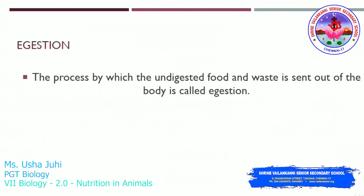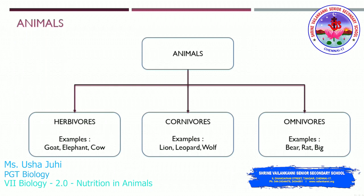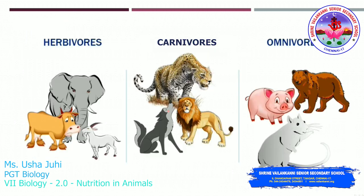Egestion is the process by which undigested food and waste is sent out of the body. Animals are classified into three types: herbivores, carnivores, and omnivores. Herbivores are plant eaters.